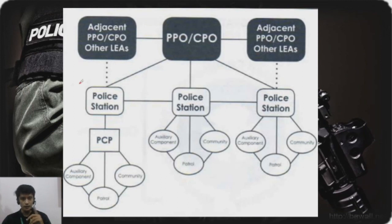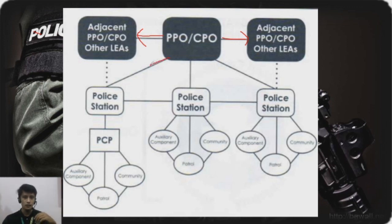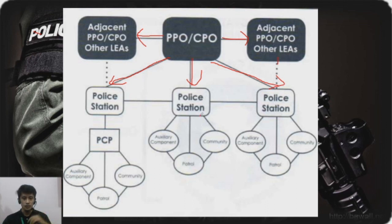The diagram shows the police provincial office coordinating with adjacent police provincial offices and other law enforcement agencies such as BFP and PDEA. These arrows also show coordination flowing downward to lower police stations and other police stations. That is how crucial the communication system within the PNP is.